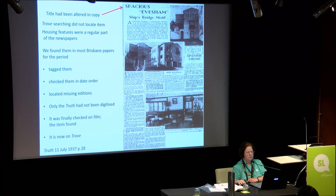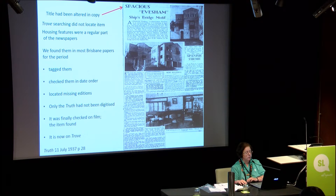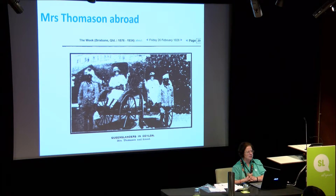We finally found it in The Truth, 11th of July, 1937, page 28, largely through trying to put a limit on the time frame and searching all the options. And if there hadn't been four queries, we mightn't have bothered. Here's Mrs Evelyn Thomason — she went off to Salon and was reported in the papers, she ended up doing quite well. The week was the weekend version of the Telegraph — that's where they'd have a lot of the feature articles and photographs. Her grandfather Louis Lowe had arrived in Victoria during the gold rushes. She was living in Queensland — always a reminder to look at every state, never believe that life begins and ends in Queensland.